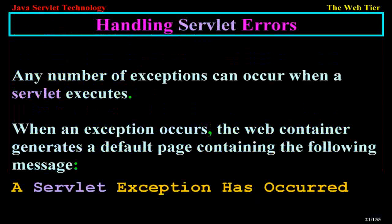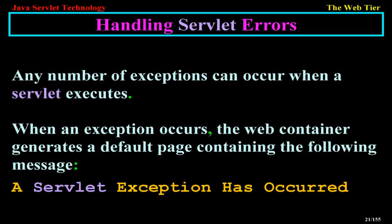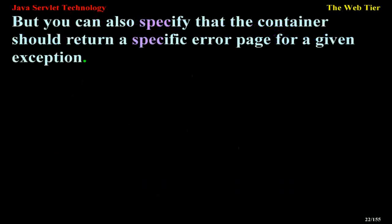Handling servlet errors. Any number of exceptions can occur when a servlet executes. When an exception occurs, the web container generates a default page containing the message: 'A servlet exception has occurred.' But you can also specify that the container should return a specific error page for a given exception.